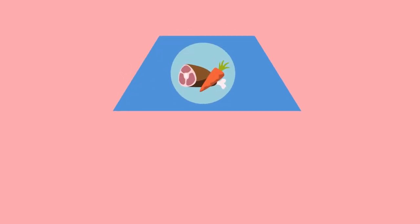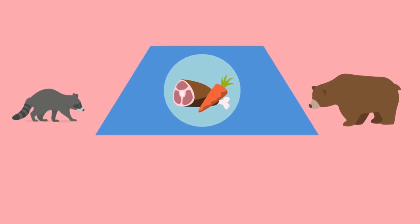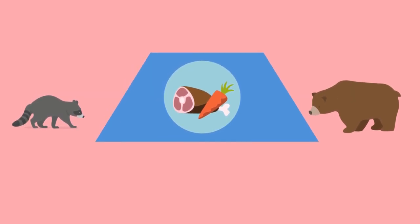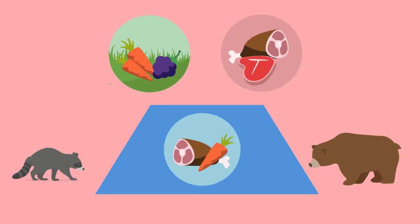Which trophic level do you think has the most direct interaction with other trophic levels? If you said the intermediate trophic level, or the one that contains omnivores, you're right! Omnivores tend to eat a much wider variety of organisms than either of the other two trophic levels, and this variety in their diets leads to them having more direct interactions than other trophic levels.